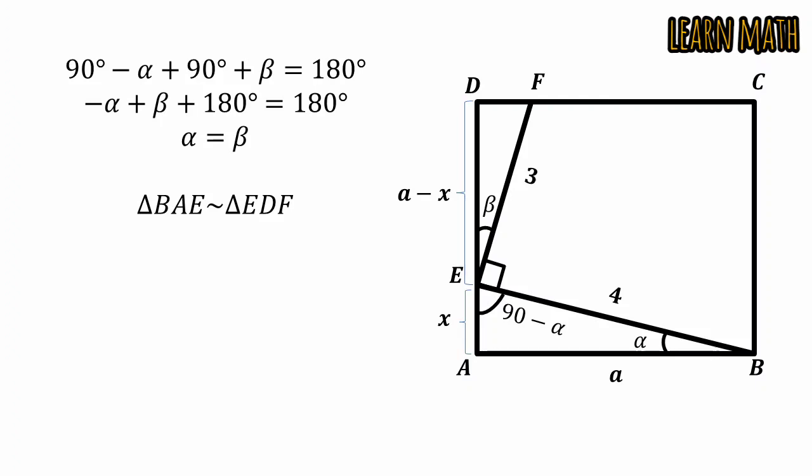So we can write DE divided by EB is equal to EF divided by BE. We will put values here and we will get this. Simplify this, we will get 4 times a minus x is equal to 3a.